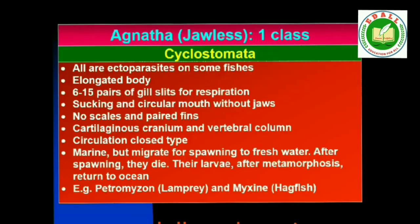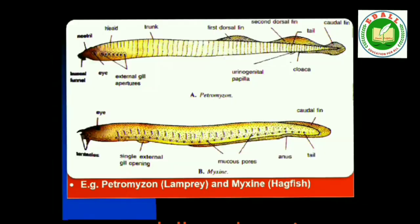First is Class Cyclostomata. All living members of the class Cyclostomata are ectoparasites on some fishes. They have an elongated body bearing 6–15 pairs of gill slits for respiration. Cyclostomes have a sucking and circular mouth without jaws. Their body is devoid of scales and paired fins. Cranium and vertebral column are cartilaginous. Circulation is of closed type. Cyclostomes are marine but migrate for spawning to fresh water. After spawning, within a few days, they die. Their larvae, after metamorphosis, return to the ocean. Examples: Petromyzon (lamprey) and Myxine (hagfish).